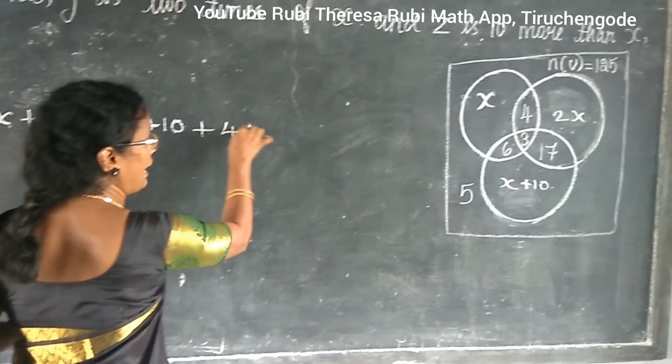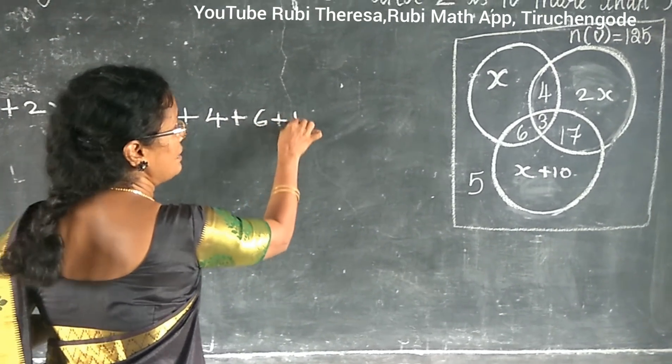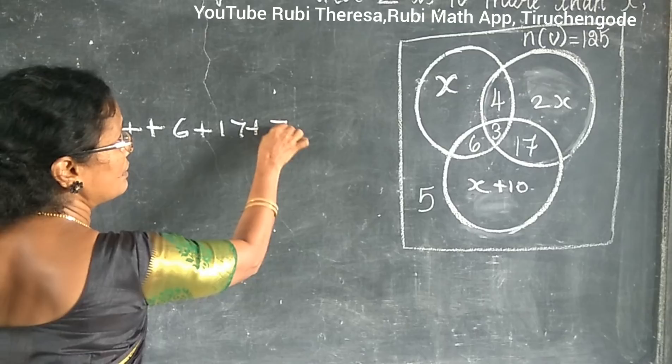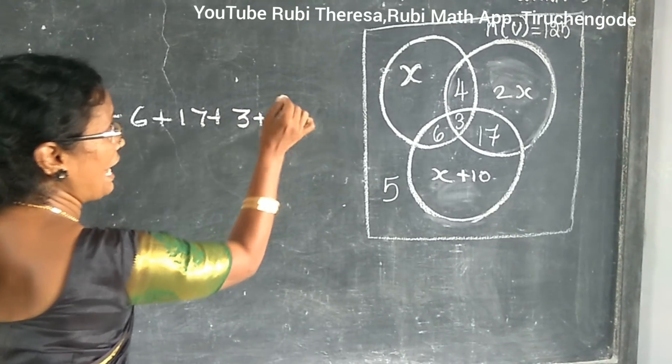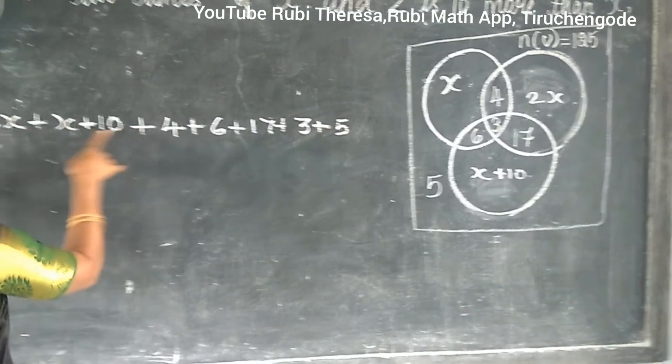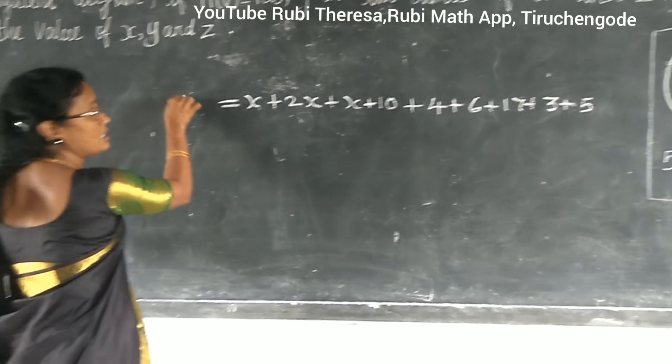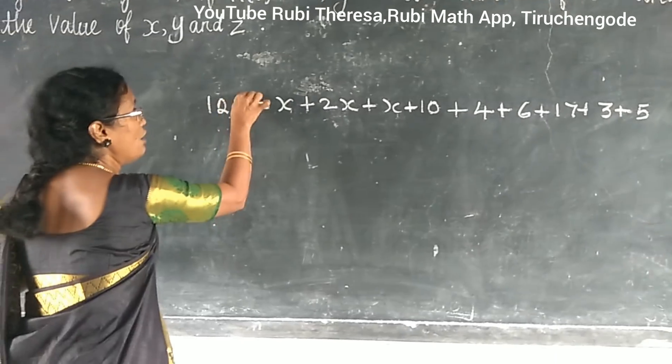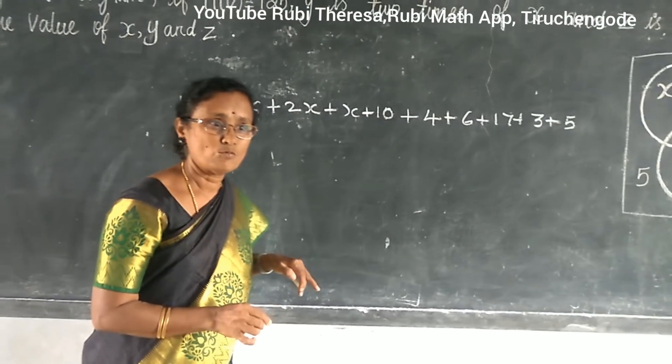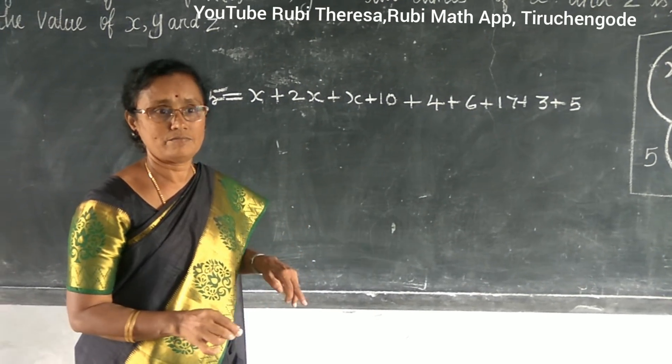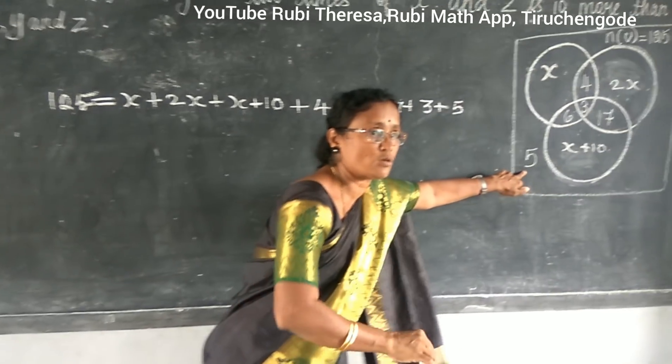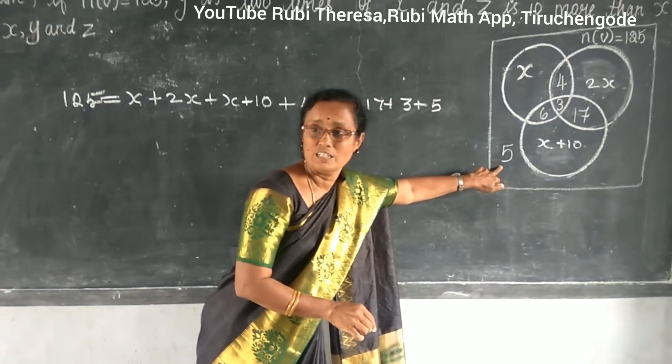4 plus 6 plus 17 plus 3 plus 5. What all these when you are adding, what will you get? 125. Because you are adding this 5 also. Do you follow?